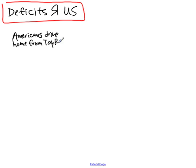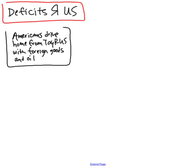The core of our problem starts with America's twin deficits: a trade deficit and a budget deficit. When Americans drive home from Toys R Us with foreign goods, they are importing toys and sending their dollars overseas. America is importing a lot more than it is exporting, leaving foreign countries with a great deal of U.S. dollars and America with a big trade deficit.